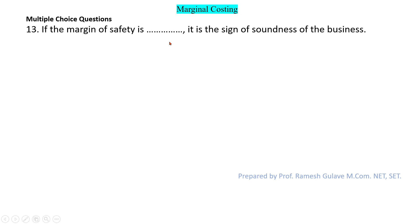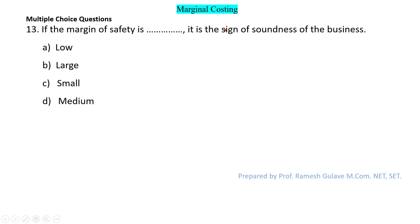The next question says: if the margin of safety is dash, it is a sign of soundness of the business. If margin of safety is low, it indicates weakness. So if it is large, it indicates soundness. Option B — large — is the right answer.